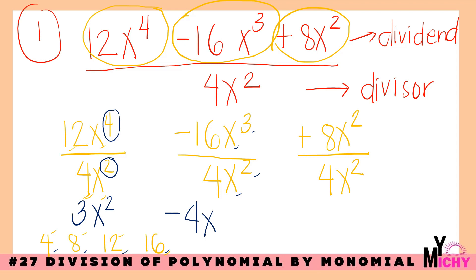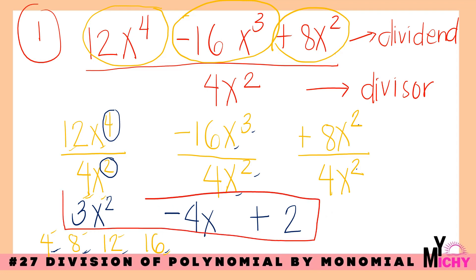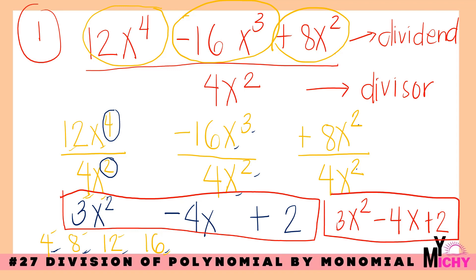Next, positive 8 divided by 4 is 2. And for the exponent: 2 minus 2 equals 0. When the exponent is 0, we cancel out the variable — x raised to 0 becomes 1, so only 2 remains. The final answer is 3x squared minus 4x plus 2. The whole polynomial is your answer.